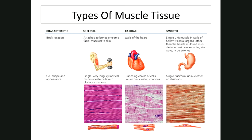Types of muscle tissue: skeletal or striated muscle is voluntary and connects bone to bone. Smooth muscle, also called visceral muscle — visceral means organ — is involuntary muscle around organs like your digestive tract and blood vessels. Cardiac muscle, or myocardium — myo means muscle, cardium means heart — is an involuntary muscle; you don't control your heart.